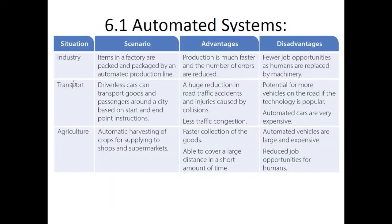These are some of the scenarios with advantages and disadvantages for each. In industry, the advantage is that production is much faster and the number of errors is reduced. The main disadvantage of using an automated system — no matter the field — is that actual human workers lose their jobs. Job loss is the most recurring and prominent disadvantage regardless of which field the automated system is applied in.